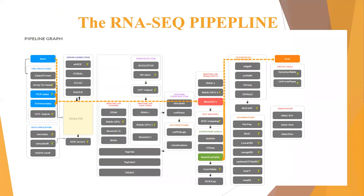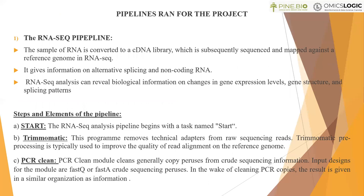We used a total of three pipelines. The first pipeline is the RNA sequence pipeline. In RNA sequencing, a sample of RNA is converted to a cDNA library, which is subsequently sequenced and mapped against a reference genome. It also provides information on alternative splicing and non-coding RNA, including microRNA, in addition to assessing gene expression levels. RNA-seq analysis can reveal biological information on changes in gene expression levels, gene structure, and splicing patterns.